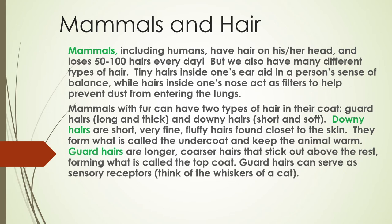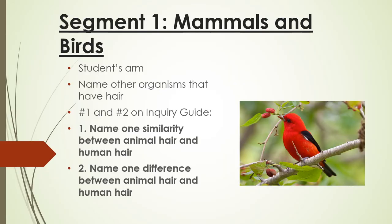Mammals with fur can have two types of hair in their coat: guard hairs, which are long and thick, and downy hairs, which are soft and short. Downy hairs are the fine, fluffy hairs found closest to the skin — they form the undercoat and keep the animal warm. Guard hairs are longer, coarser hairs that form the top coat and can serve as sensory receptors, like a cat's whiskers.